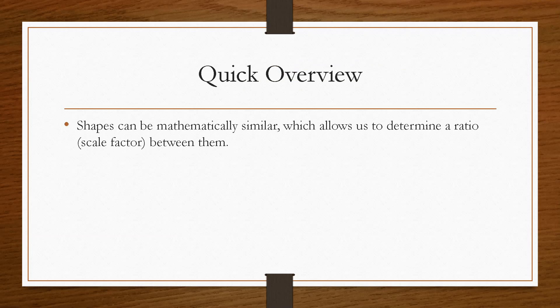So if we take a quick overview, shapes can be mathematically similar, which would allow us to determine a ratio, also known as a scale factor, between them. So these shapes are basically identical, apart from one is bigger than the other, or one is smaller than the other.